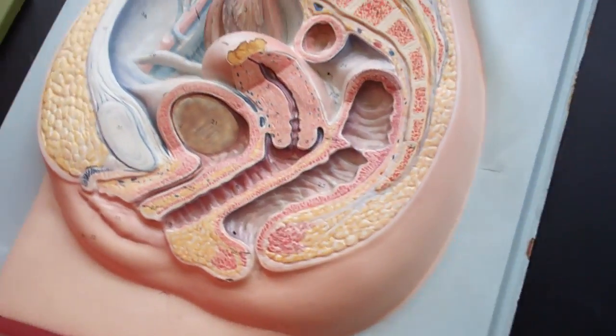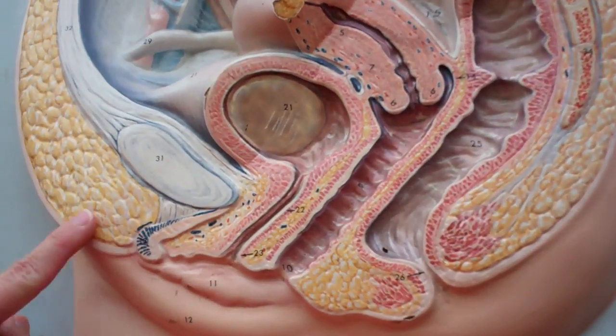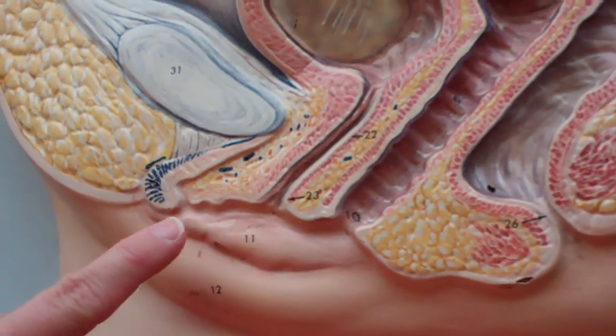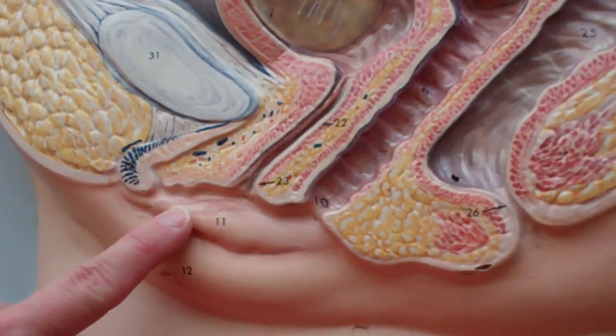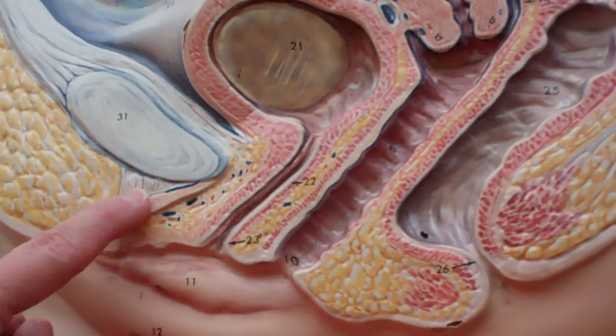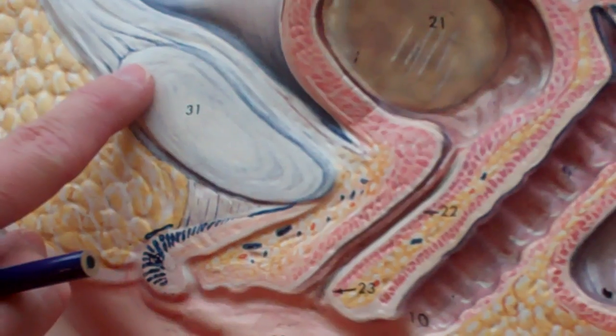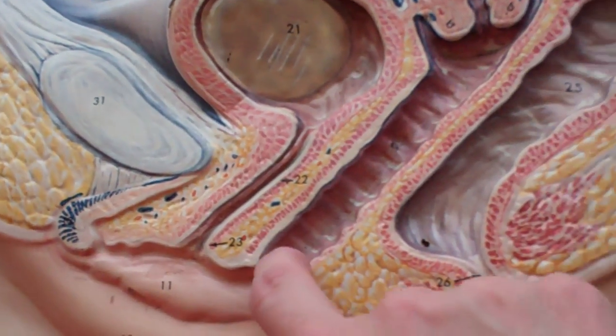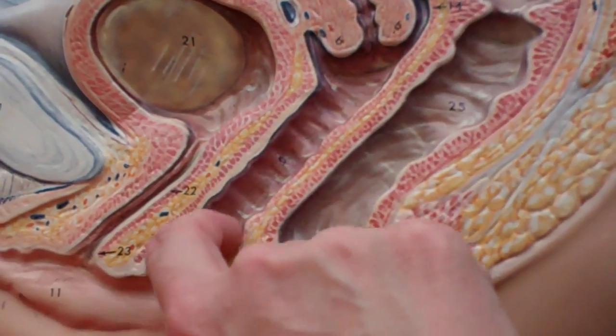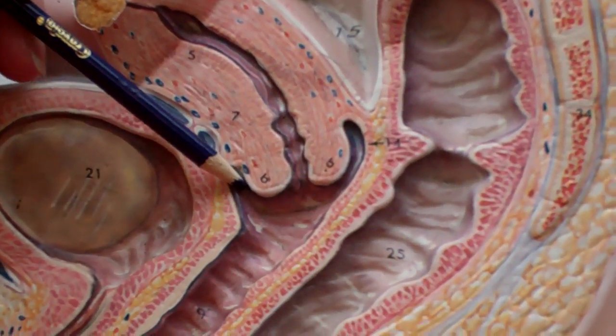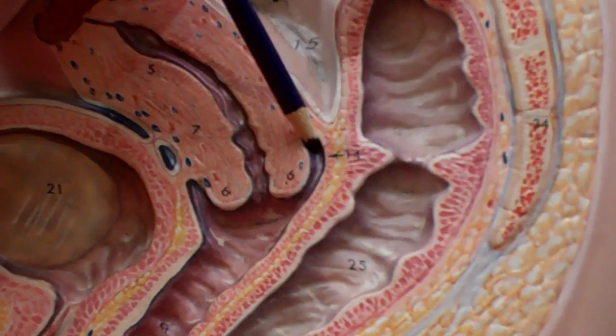On this model we have the mons pubis, which is the fat pack found over the labia majora and minora. The blue striped region is the clitoris. We have the pubic symphysis, the vagina, the anterior fornix, so this fold right here, and the posterior fornix.